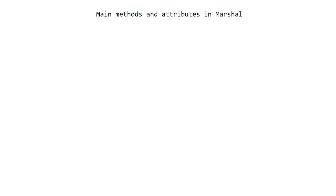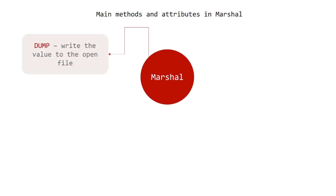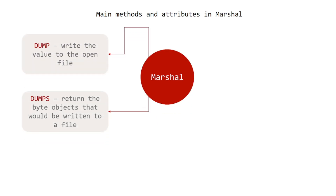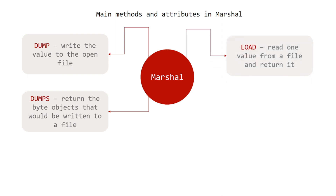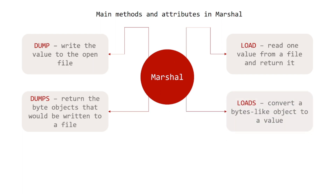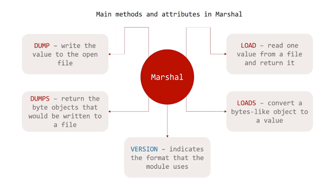Main methods and attributes in Marshall. Dump: write the value to the open file. Dumps: return the bytes object that would be written to a file. Load: read one value from a file and return it. Loads: convert a bytes-like object to a value. Version: indicates the format that the module uses.